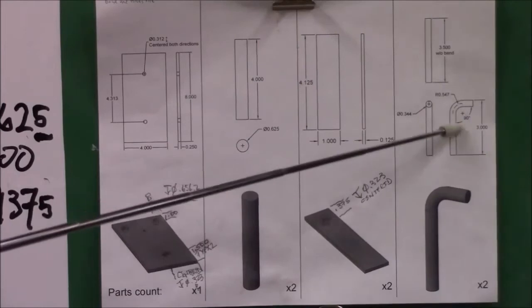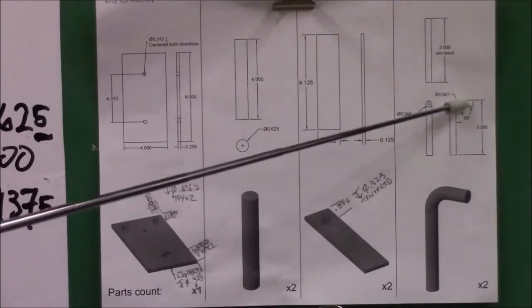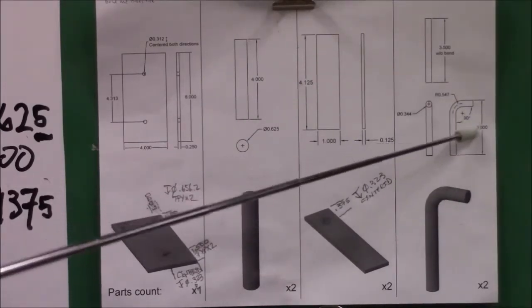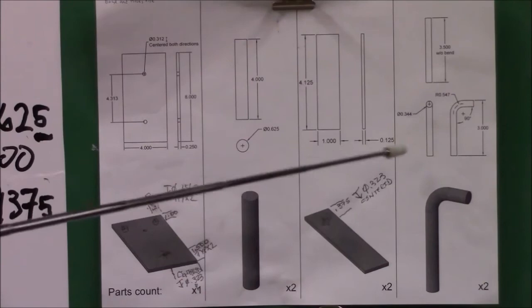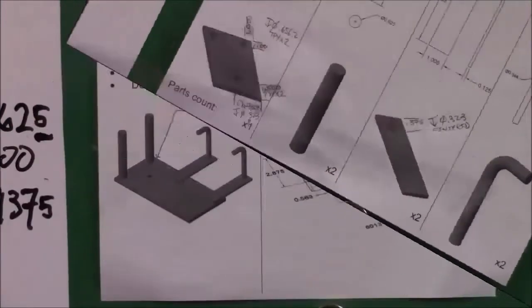Over here, if you notice, this has got a bend in it right here. This bend is a ninety-degree bend and it gives you the dimensions on what the part is supposed to be before you bend it.